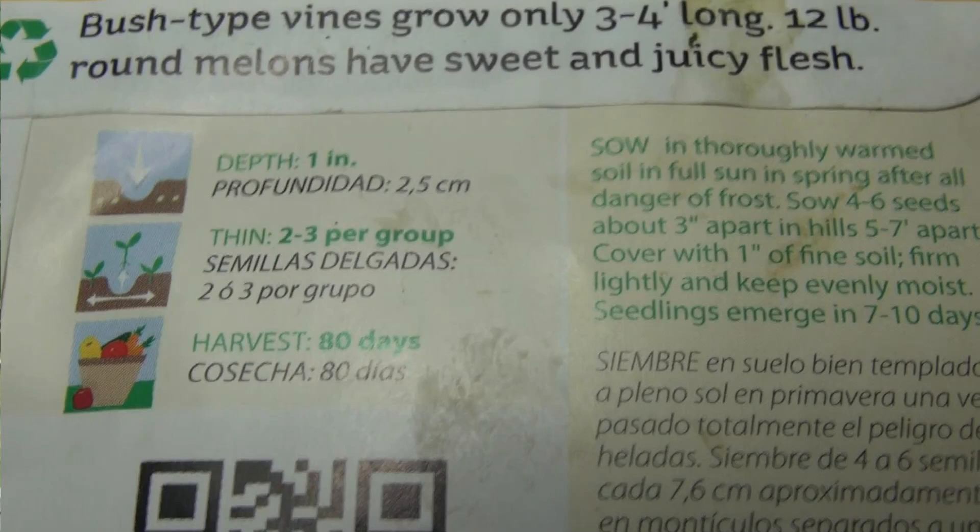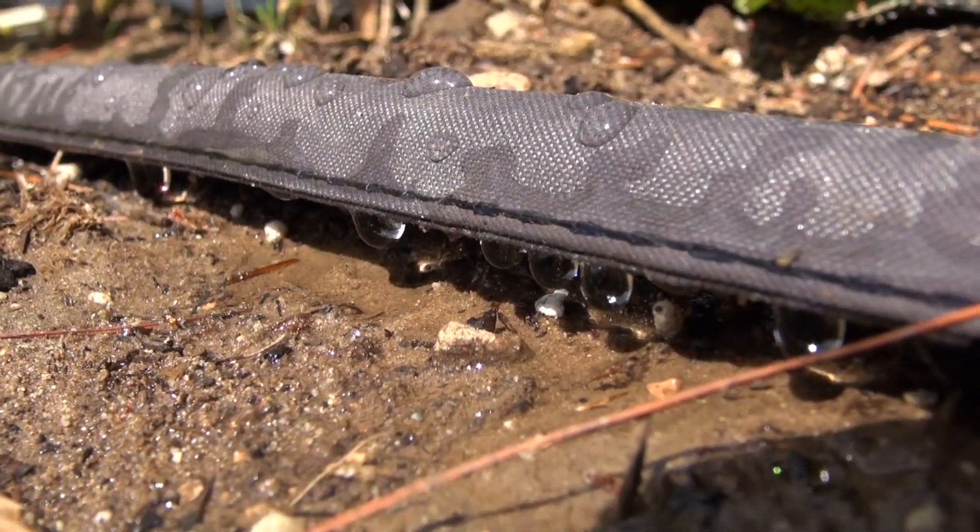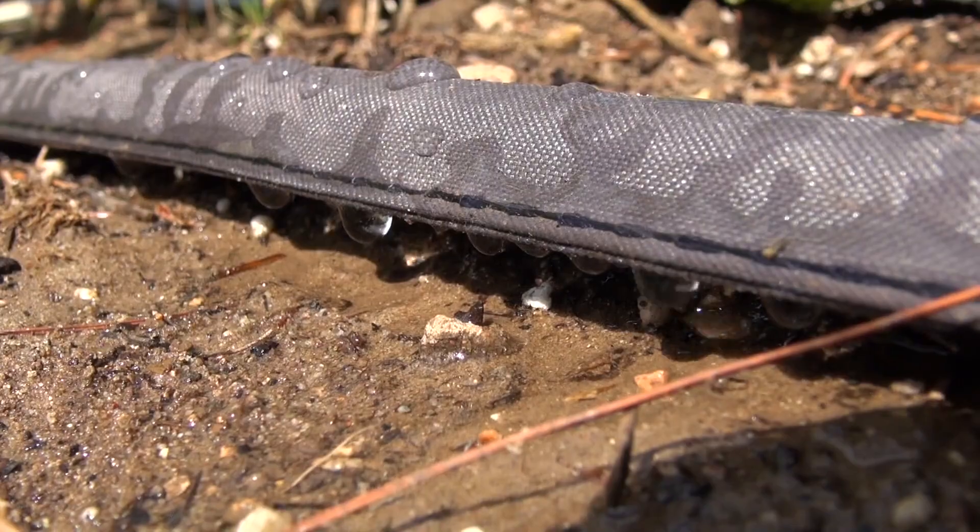Spacing is also very important — read the seed packet label for ideal spacing, because plants competing for water and nutrients won't perform as well. Keep weeds under control so they're not competing with your plants. If you don't have a lot of room and aren't growing very large melons, you can make a trellis and train them to grow upward, using supports to hold the melons in place. For watering, I usually suggest watering frequently using drip hoses right at the base of the plant so you're not wasting water and encouraging weeds.